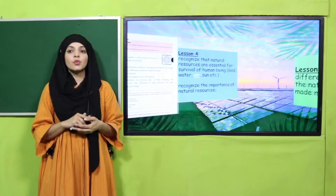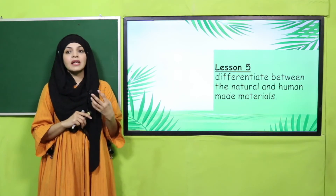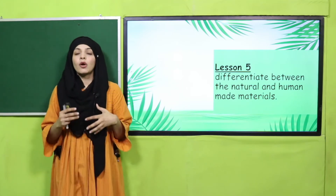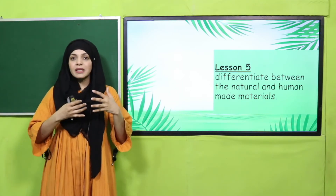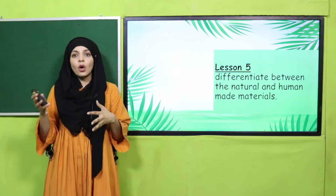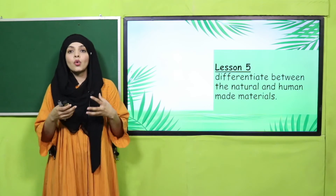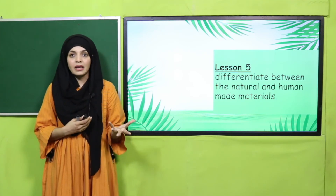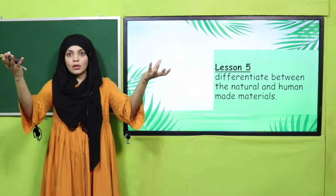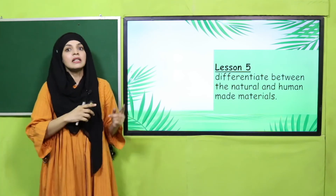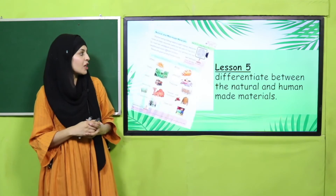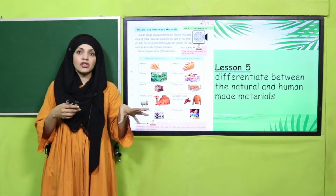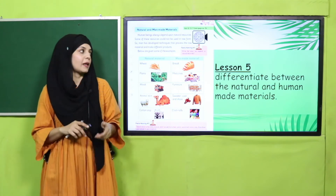Then in Lesson Number 5, students will be able to differentiate between natural and human-made materials. Hamara jo environment hai it is made up of living and non-living things — kuch cheizain natural hain, aur kuch cheizain jo hain hum natural cheezo se use karke banaate hain — human beings jo hain wo unko banaate hain, so they are called man-made things. How they are different from each other will be discussed in Lesson Number 5, page number 90.